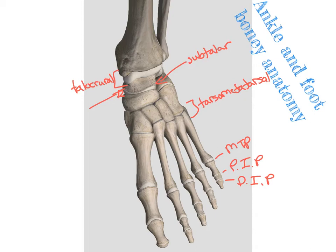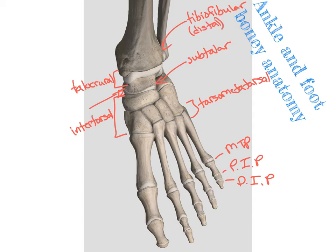The joints in between each of our tarsal bones are called our intertarsal joints. The joint between our tibia and our fibula is called our tibiofibular joint. At the foot, we are talking about the distal one. We would also see the proximal tibiofibular joint up by the knee.